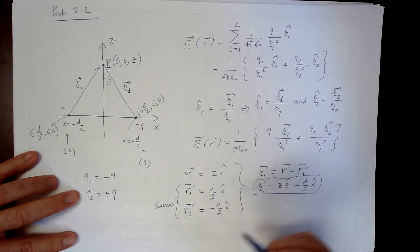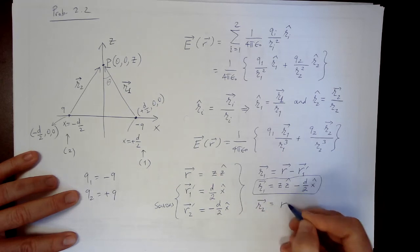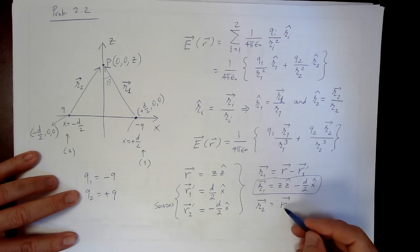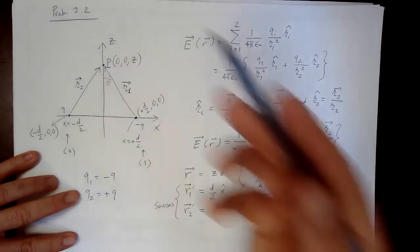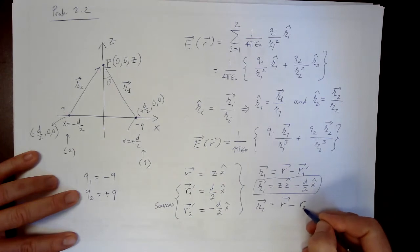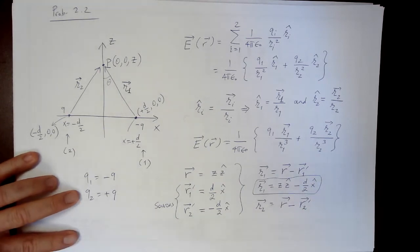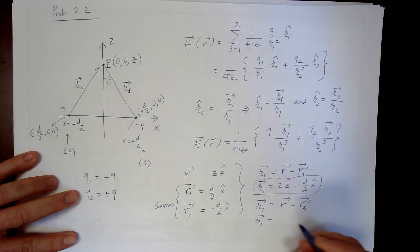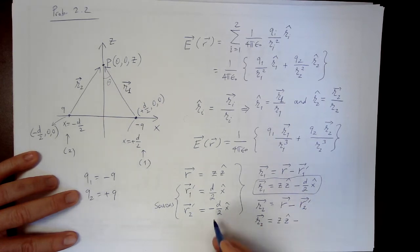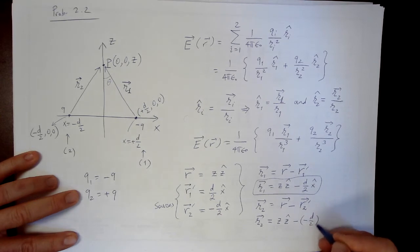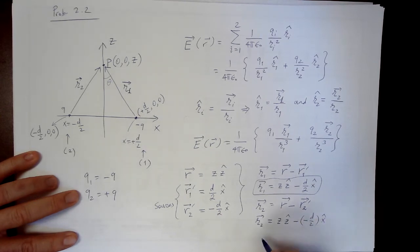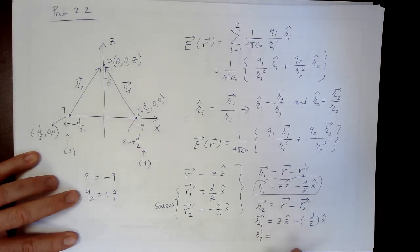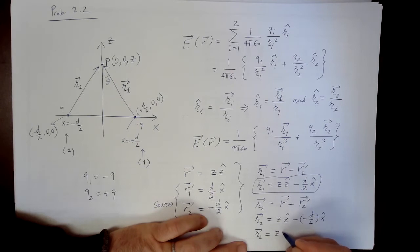So that means I know the field point, field point is my r vector, which is essentially z z hat in this case. And I need to write r prime, r1 prime, which is the first one's position. It's going to be d over 2 x hat, right? And similarly, r2 prime is minus d over 2 x hat. So using these, I can write the separation vectors, right? So r1 separation vector, script r1 is r minus r prime 1. So these are sources, right? And from that, what I can write is, script r1 then is z z hat minus d over 2 x hat. That's the first one. The second one here is script r2 is the field position where you would put the test charge, for example point p, minus r2 prime vector. And let's do that. And script r2 then is again z z hat, minus, now I have minus d over 2 x hat. So minus minus will become plus. So script r2 will be z z hat plus d over 2 x hat.